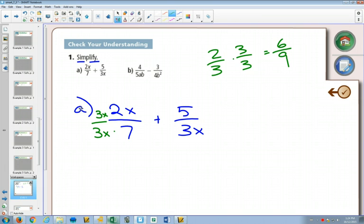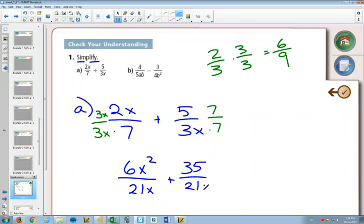Now my second fraction, it's missing on the bottom a 7. So I multiply by 7 over 7. So I'm going to change what it looks like, but not change what it equals to. Now we have 6x squared over 21x plus 35 over 21x. And now that I have a common denominator, I can add the tops.